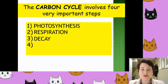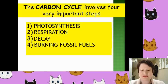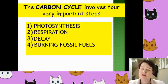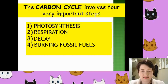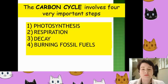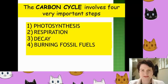The fourth process is a human process — it is not naturally occurring — and that is the burning of fossil fuels. So within this we have three natural processes and one synthetic process. There is more we can add, but as a starting point these are a good first few steps.